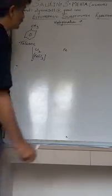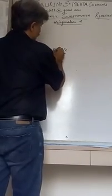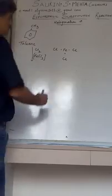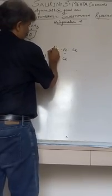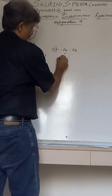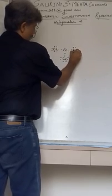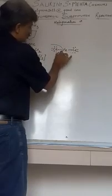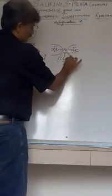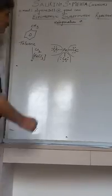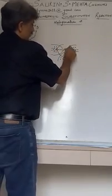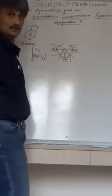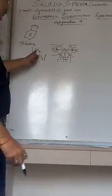FeCl3 is chosen because Fe has atomic number 26, with 26 electrons. Its three valence electrons are bonded with Cl, and each Cl has seven valence electrons. Fe shares its electrons with each chlorine atom, and as a result each chlorine completes its octet. But iron Fe is not yet satisfied with its octet, and that will prompt the reaction to create an electrophile out of Cl2.